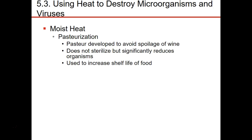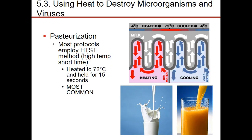Pasteurization heats the environment up a little bit more for a short period of time and then cools it very rapidly. Again, this does not sterilize, but it does reduce the population of microbes — specifically, spoilage microbes that are causing food to go bad early. HTST is the most common form of pasteurization: we heat the environment up and then cool it down very rapidly, and this is how we pasteurize the majority of our milks and juices.